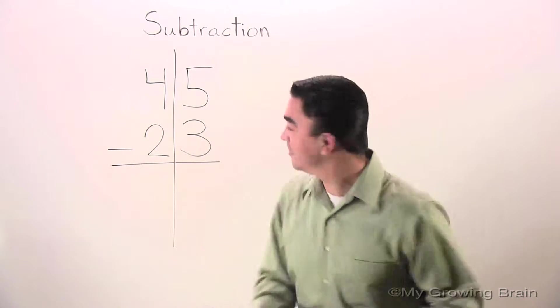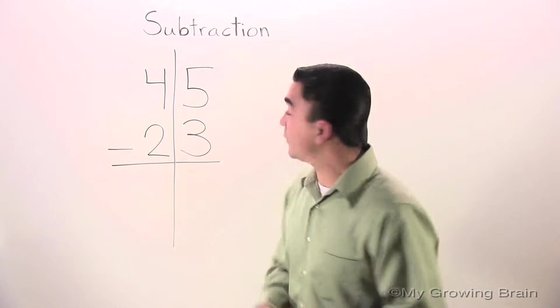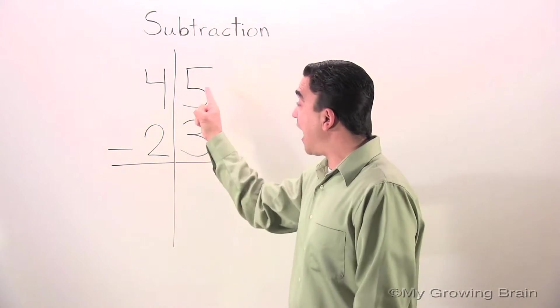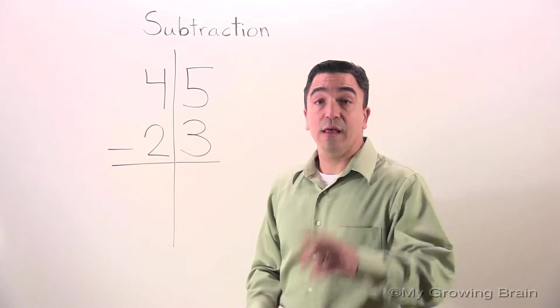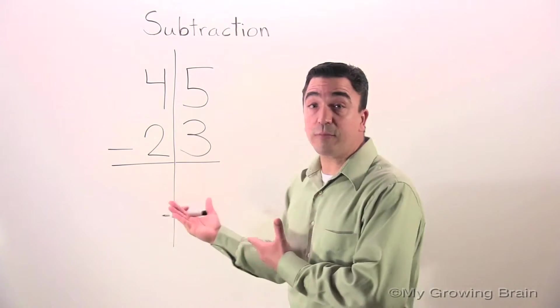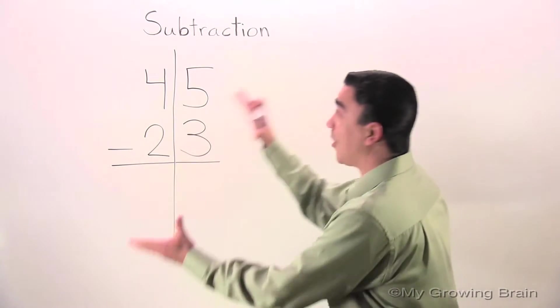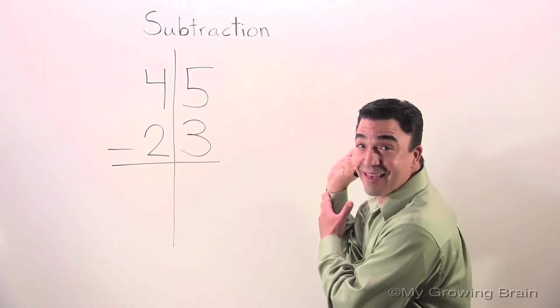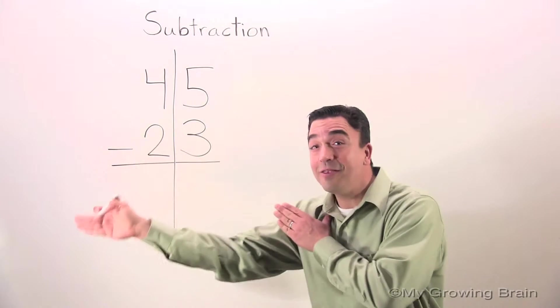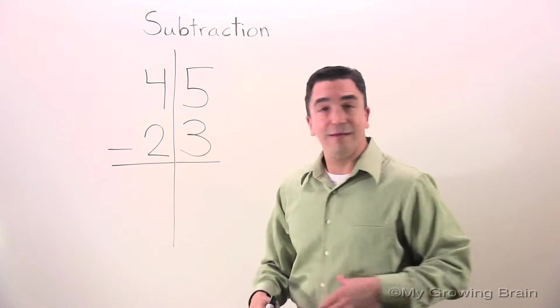We're ready to go. First thing I'm going to do is start in the ones place. 5 minus 3. Now please remember, when we're doing the subtraction problem, we always start at the far right and we work to the left. Let's do it.